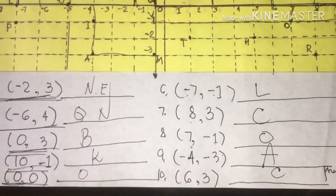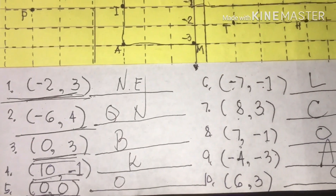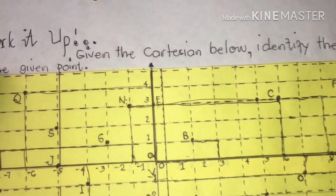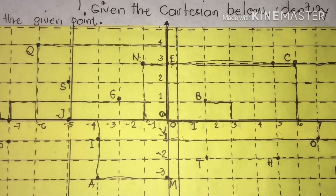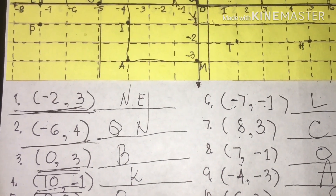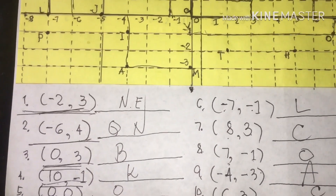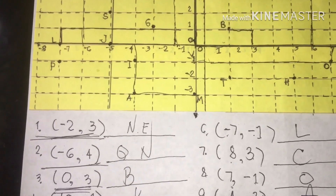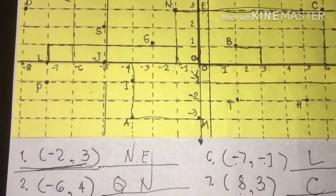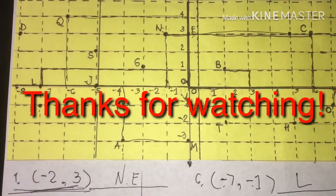All we have to do is connect the lines because the Cartesian coordinates are given. We are going to coordinate using intersecting lines from the given points. This is how we do the Cartesian coordinate system. If the given point is provided, all we have to do is identify and follow the instructions so that we can answer it perfectly. Good day and God bless. Thank you for watching my video. Bye-bye.